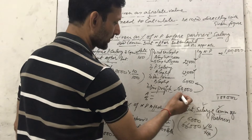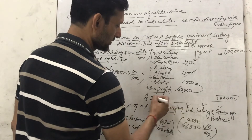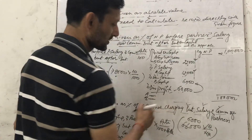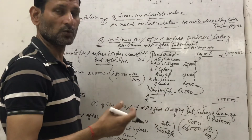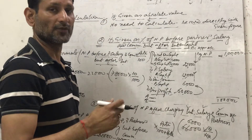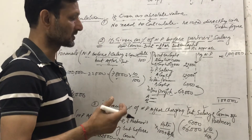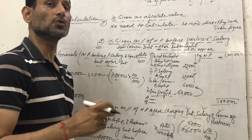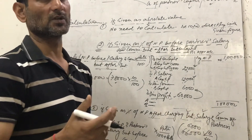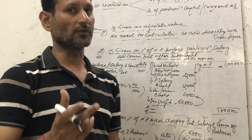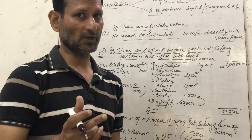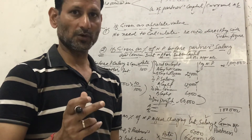This divisible profit of ₹60,000 will be distributed among the partners in their profit sharing ratio as given in the question. Thank you.